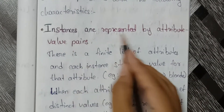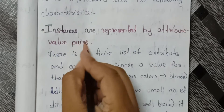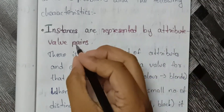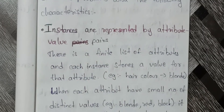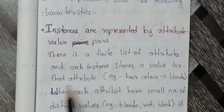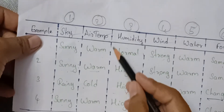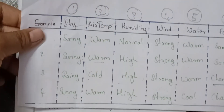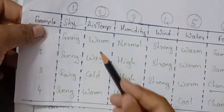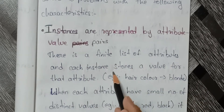First characteristic: instances are represented by attribute-value pairs. There is a finite list of attributes and each instance stores a value for that attribute. For example, sky has 3 attribute values, air temperature has 2 attributes: warm and cold. So a finite list of attributes, and each instance stores a value of that attribute.